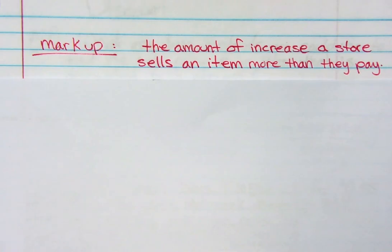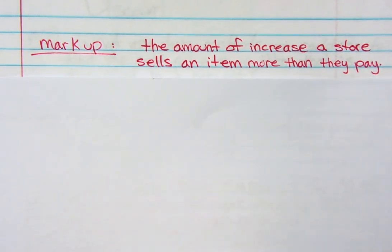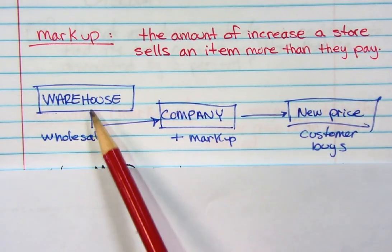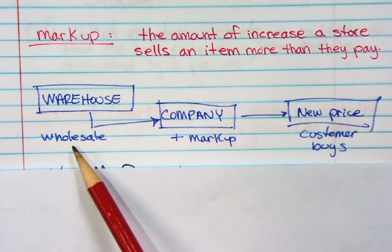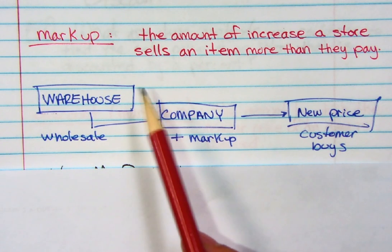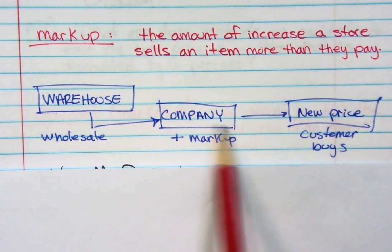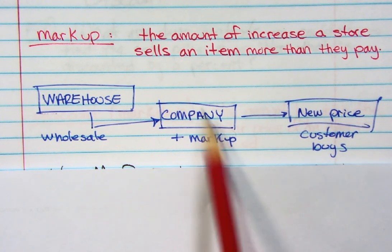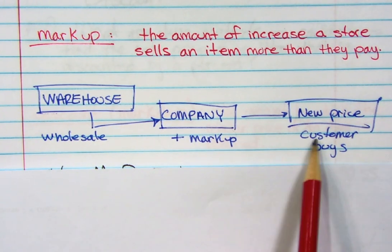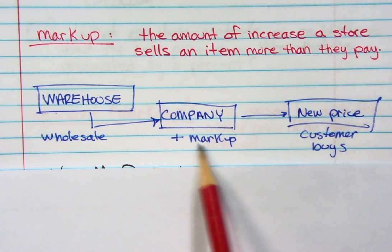That brings us to our last concept: markup. Markup is the amount of increase a store sells an item for beyond what they paid. If you own a store, you buy something from a warehouse at wholesale price — they give it to you cheaper because you buy in bulk. Then you add a markup percentage. For example, you buy pencils for $0.50 and mark them up so they sell for $1.00. That new price is what the customer pays, so the store makes a profit.